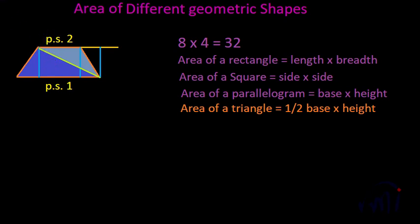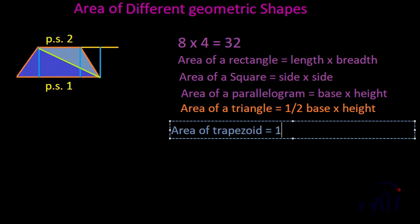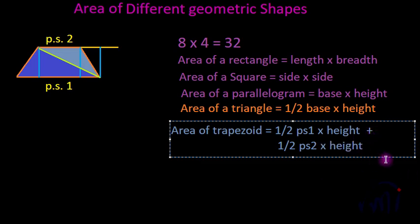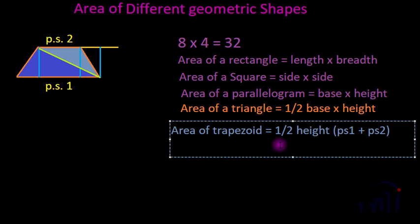The area of the trapezium equals the area of triangle 1 plus the area of triangle 2. Area of the blue triangle is ½ × PS1 × height, and area of the gray triangle is ½ × PS2 × height. Taking ½ and height common, we get area = ½ × height × (PS1 + PS2). This is the formula for the area of a trapezium: ½ multiplied by the height (distance between parallel sides) multiplied by the sum of the two parallel sides.